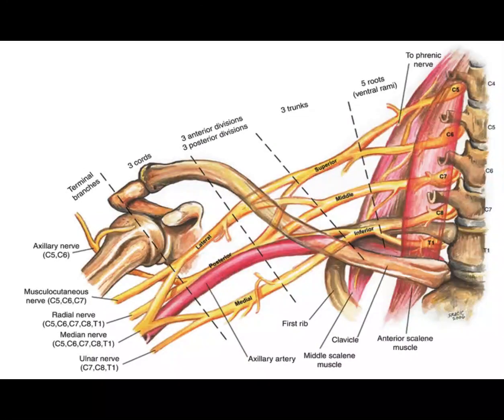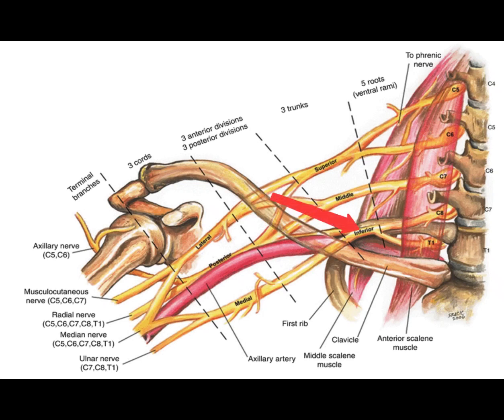The interscalene block is performed at the cervical nerve roots, with local anesthetic typically deposited between the C5 and C6 nerve roots. The supraclavicular block is performed at the base of the neck above the first rib and adjacent to the subclavian artery to block the superior, middle, and inferior trunks.